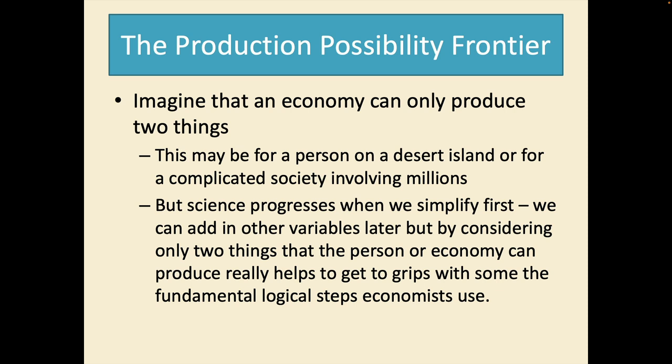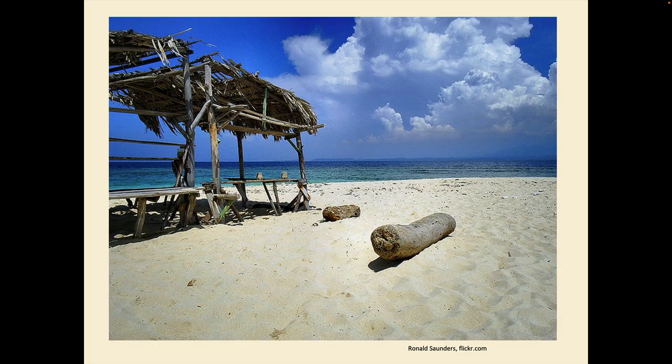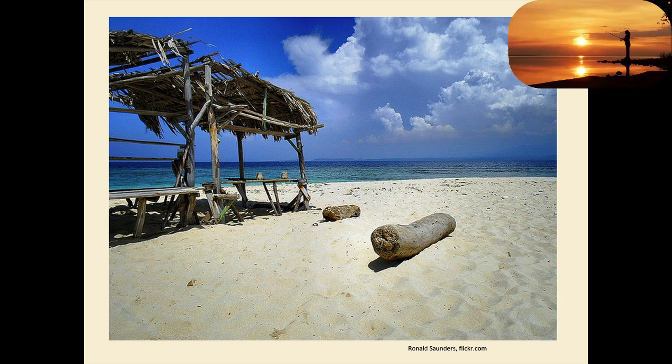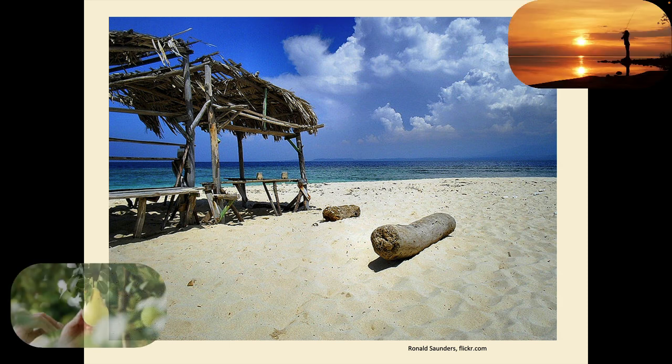But as science progresses we simplify first, then we can add in the other variables later. But by considering only two things that a person or an economy can produce really helps us to get to grips with some of the fundamental logical steps economists use. So let's use this desert island. We're going to put a young woman here, Sophie, on the island and she has two things to do. She can either go fishing or she can collect fruit.